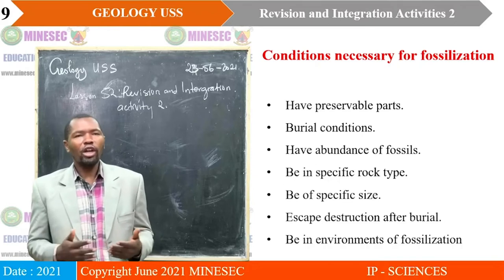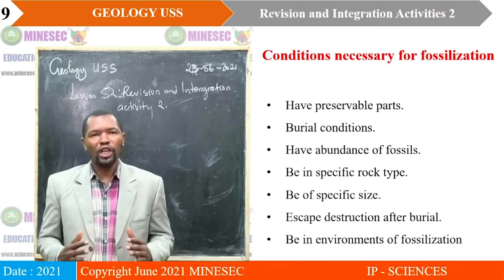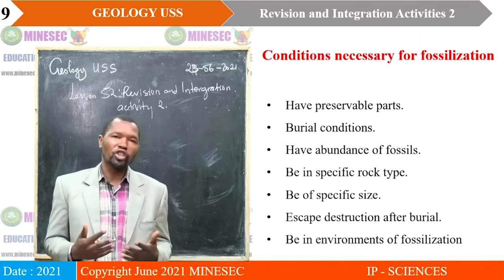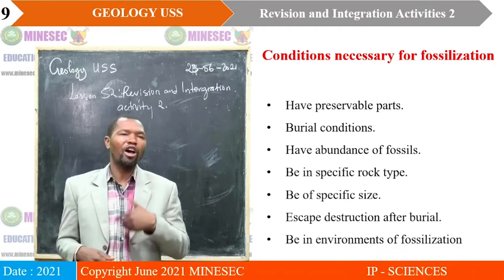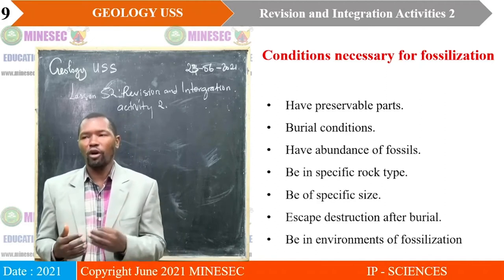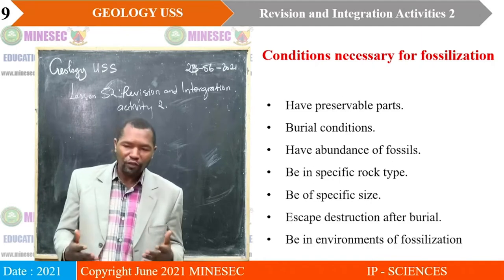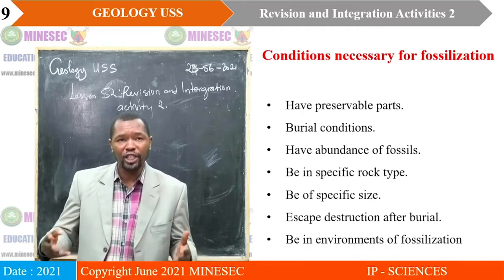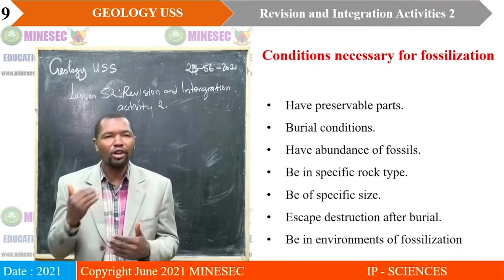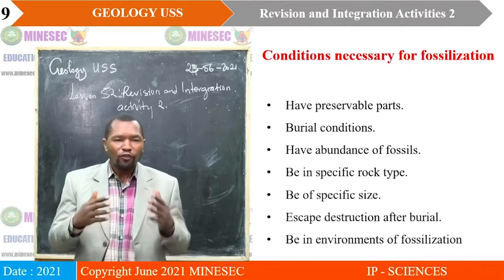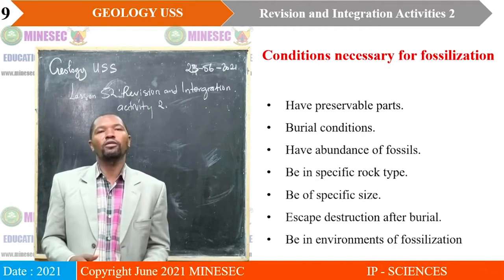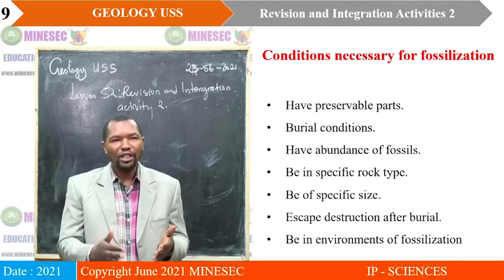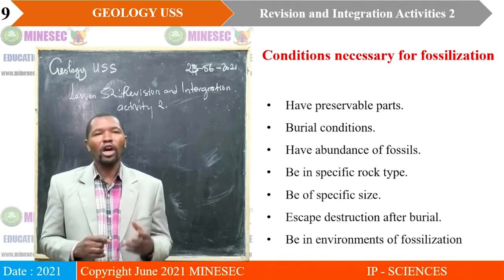We equally saw the different conditions necessary for fossilization — the potentials or chances for which organisms can be preserved as fossils. Preservation of organisms is a very rare situation, so there must be specificities an organism needs to adopt in order to be fossilized. For an organism to be fossilized, it must have preservable hard parts — organisms with hard parts have higher chances of being preserved than organisms with soft parts.